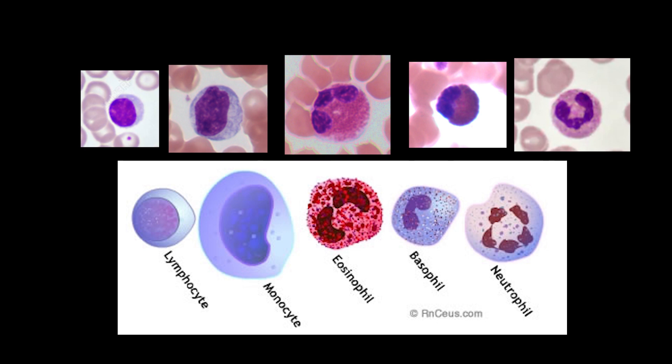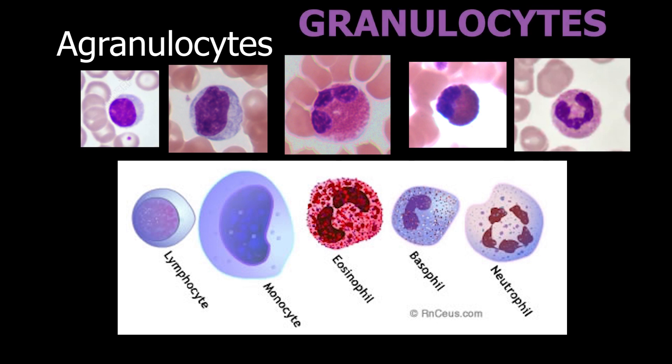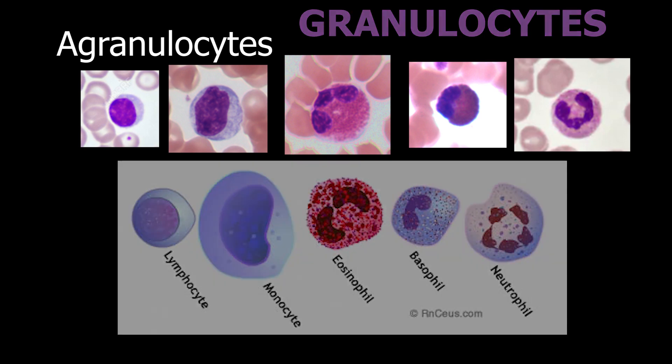I am going to give you some pointers to help you out. You'll notice that the two images on the left — the lymphocyte and the monocyte — have cytoplasm that is clear, whereas the eosinophils, basophils, and neutrophils have cytoplasm that looks to have some granules in them. In fact, eosinophils, basophils, and neutrophils are called granulocytes because they do have these granules.